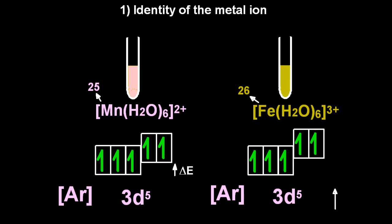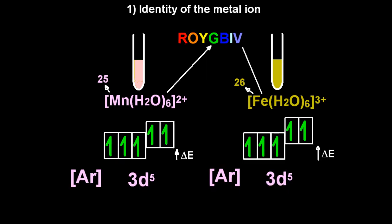So manganese is going to have the smaller split. And iron, with one more proton, is going to have a bigger split. So how can we work out what colour is going to be absorbed? Well, I'm going to tell you that manganese absorbs green light. And so iron, if it's got a bigger split, it has to absorb a higher energy light, and it actually absorbs blue light.